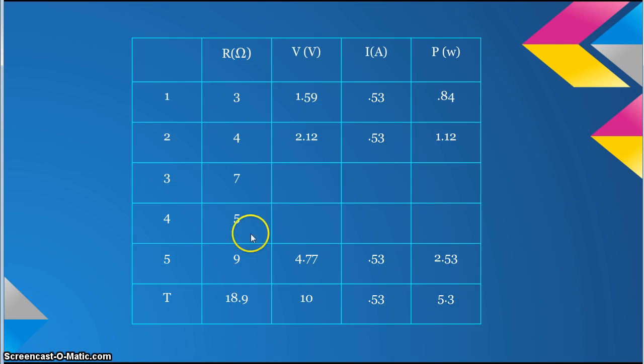Now, put the numbers you got for current, power, and voltage for each resistor into the chart. Now, all we have to do is solve for R3 and R4.